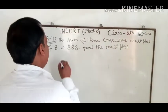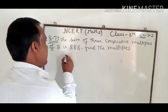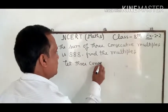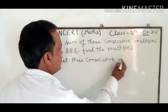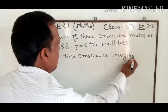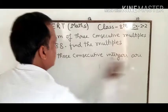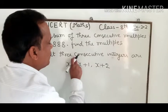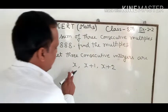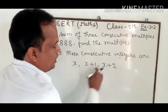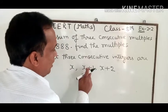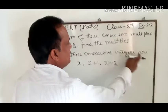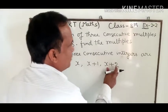Now let us start from here. Let three consecutive integers are x, x plus 1, and x plus 2. The meaning of consecutive is continuous - like if we take 2, the next number is 3, and the next is 4. So we add 1 to get the next consecutive number.